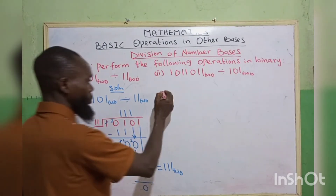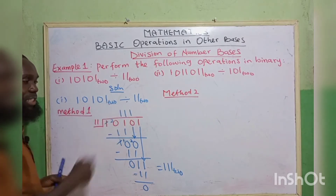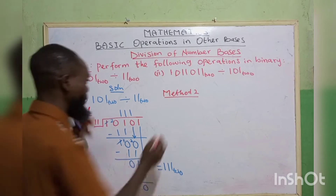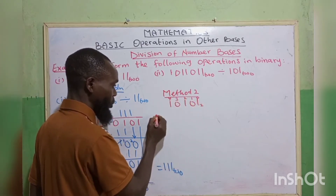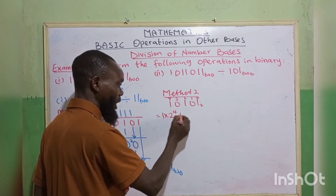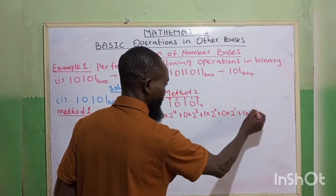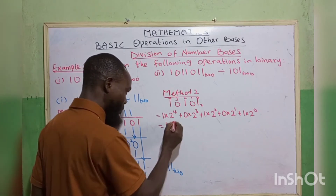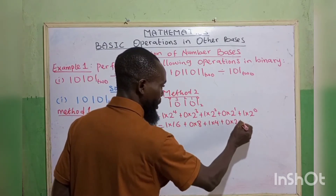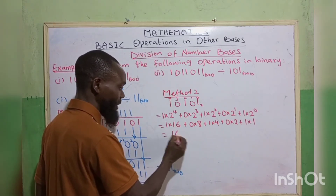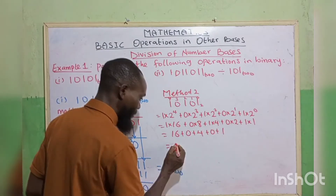Method 2 is to convert — that is, to change this into base 10. Meaning 10101 base 2. We label the positions 0, 1, 2, 3, 4. So we have 1 times 2 to the power 4, plus 0 times 2 to the power 3, plus 1 times 2 to the power 2, plus 0 times 2 to the power 1, plus 1 times 2 to the power 0. This gives 1 times 16, plus 0 times 8, plus 1 times 4, plus 0 times 2, plus 1 times 1. So we have 16 plus 0 plus 4 plus 0 plus 1. That is 21 base 10.